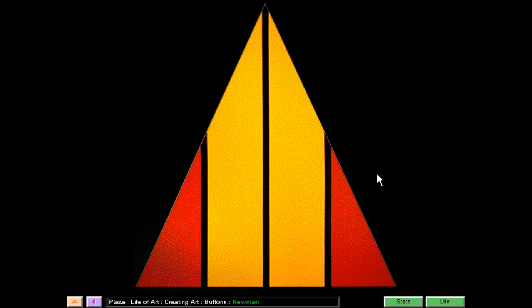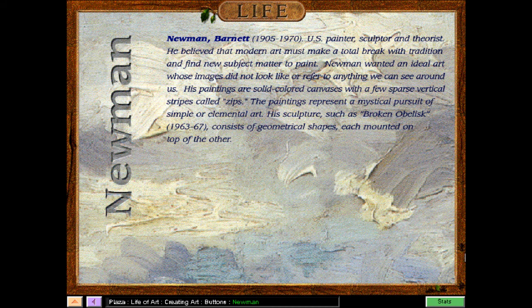Gotta love that jazz music! Let's check out the life of this painter. No picture of this guy. Anyway, Barnett Newman was born in 1905 — a U.S. painter, sculptor, and theorist. He believed that modern art must make a total break with tradition and find new subject matter to paint. Newman wanted an ideal art whose images did not look like or refer to anything we can see around us. His paintings are solid colored canvases with a few sparse vertical stripes called zips, representing a mystical pursuit of simple or elemental art. His sculpture, such as Broken Obelisk, consists of geometrical shapes, each mounted on top of each other.